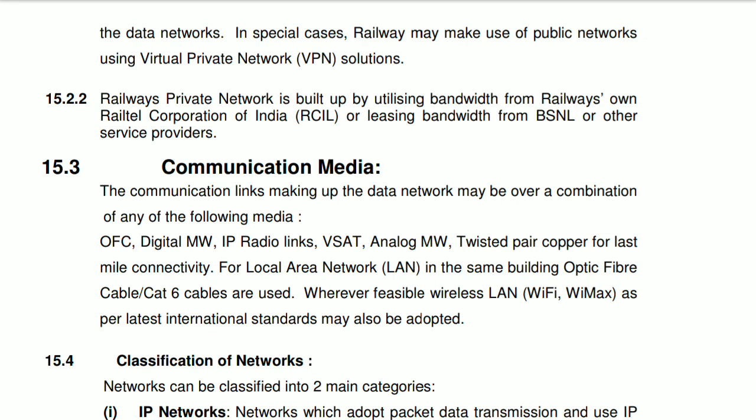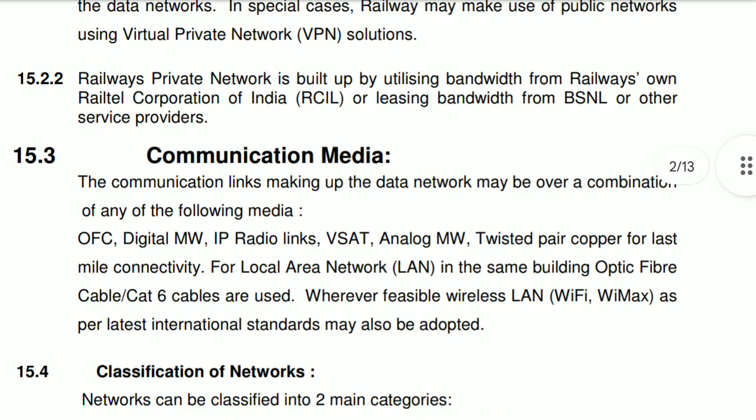Digital microwave, IP radio link, V-SAT, analog microwave, twisted pair copper for last mile connectivity, LAN in the same building — optical fiber cable and Cat6 cables are used. Wherever feasible, wireless LAN as per the latest international standard may also be adapted. These are the communication media used in the data network in railway.